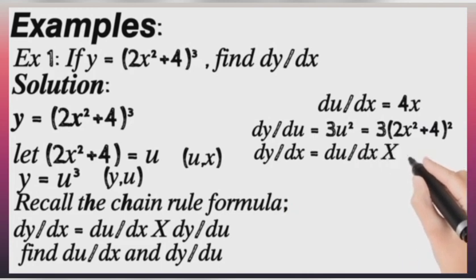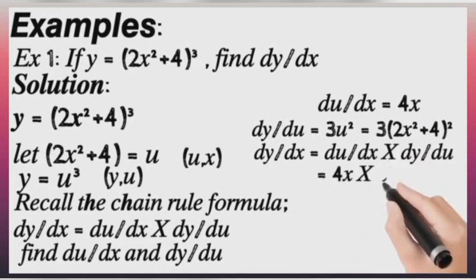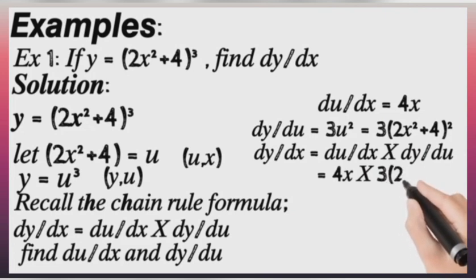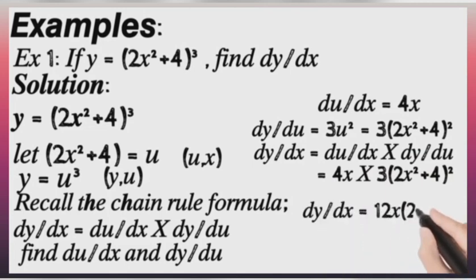Now, when you multiply them together, you're going to get 4x times 3 into bracket (2x squared plus 4) raised to power 2. And finally, we're going to be having 12x into bracket (2x squared plus 4) raised to power 2. That's very simple and correct.